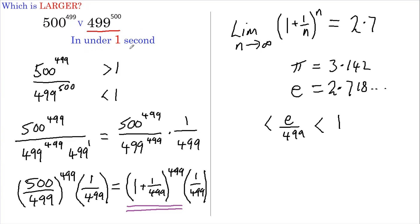Now how about my claim that you can do this in under 1 second? Well, all you have to do is look at the powers. If they're both greater than e—and remember e equals about 2.7—then the term with the larger power is larger.